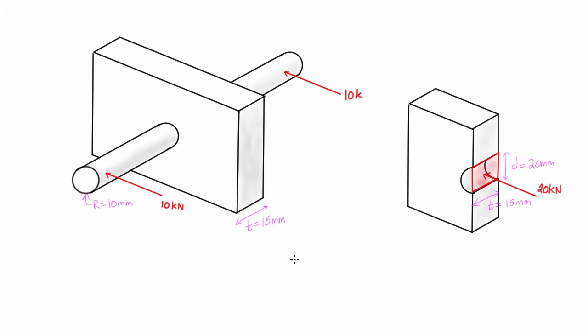So the way that we write our bearing stress is it's sort of normal to this rectangular surface, so we use lowercase sigma and we denote it with a lowercase b. So this is our bearing stress and this is just equal to our applied force.